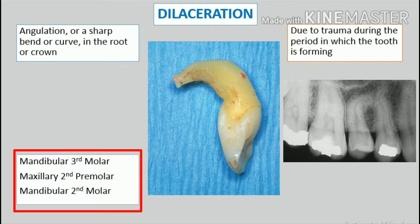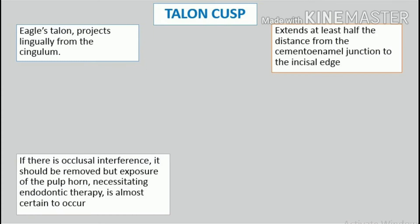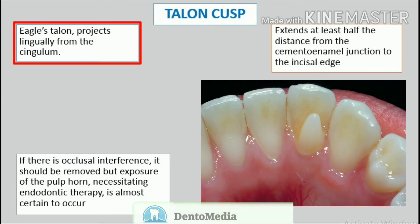Of these teeth, the most commonly affected were the mandibular third molars, followed by the maxillary second premolars and mandibular second molars. The maxillary and mandibular incisors were the least frequently affected, representing approximately 1% of the series.